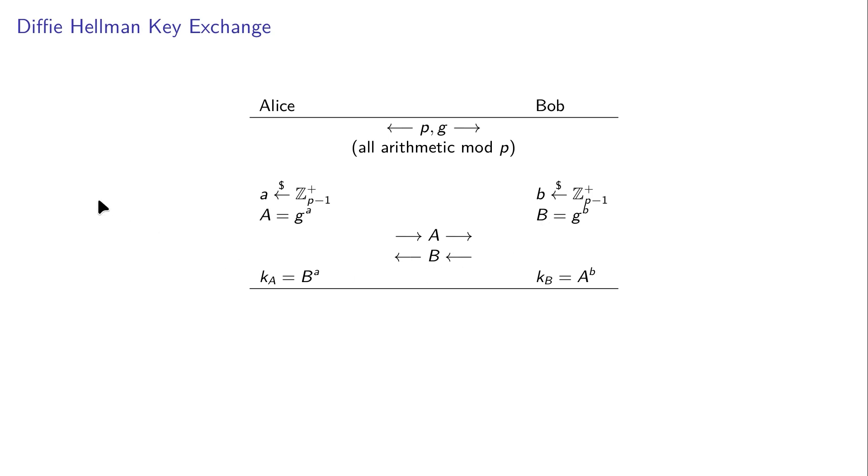Now upon receiving the message from Bob, Alice will take her secret exponent and compute B to the power a, which results in her version of the key. Bob does exactly the same thing. So Bob takes the message received from Alice and uses his secret exponent to compute his version of the key. Now it turns out by simple mathematics that these two keys are the same. So this is the key that Alice and Bob agree on.